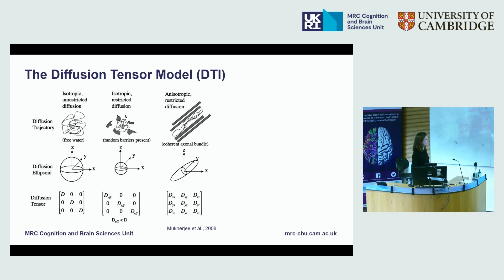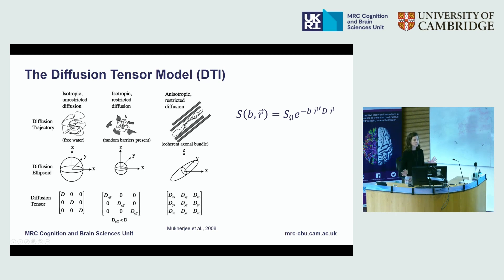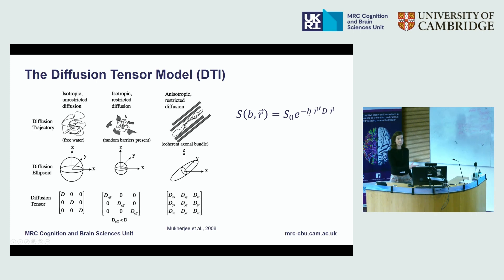Once we have fitted the diffusion tensor, we can derive a number of other metrics, but the model itself is very simple. S0 represents the baseline signal in the absence of any movement, and it's an exponential model. The B value tells us how sensitive to movement of water molecules we are, D is the diffusion tensor, and R represents the direction in space we are sampling. To fit this model, we need seven measurements: one B equals zero image with no sensitization to diffusion, and six more with a non-zero B value to get the six elements of the symmetric diffusion tensor.